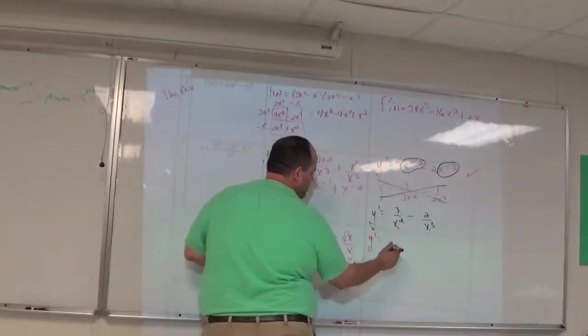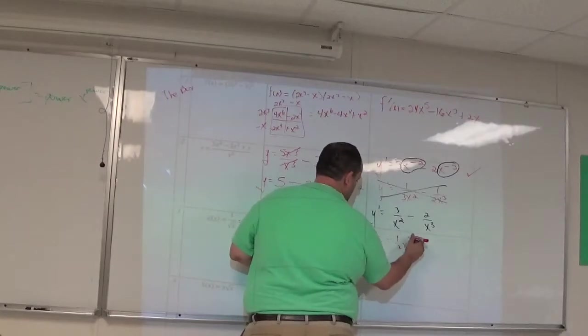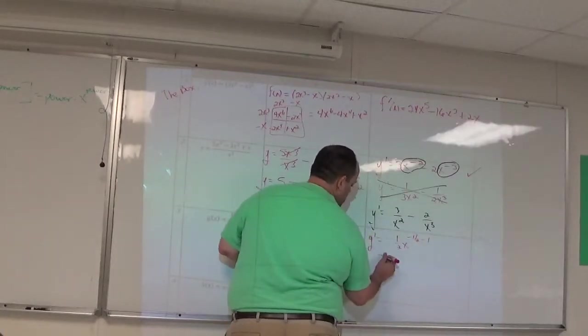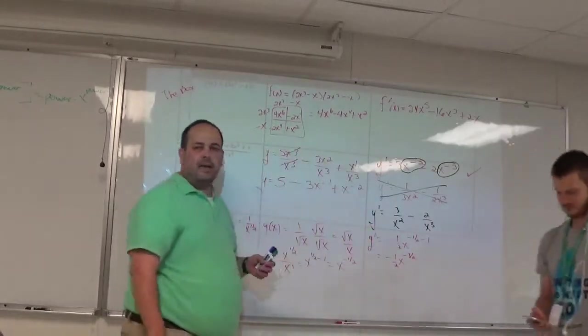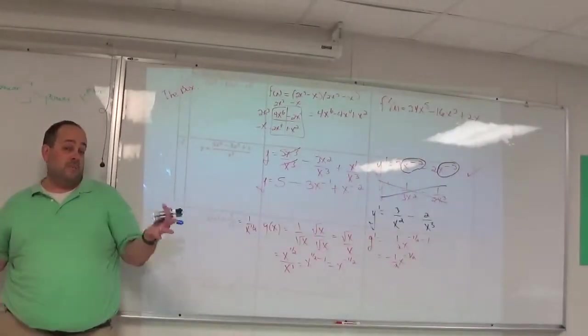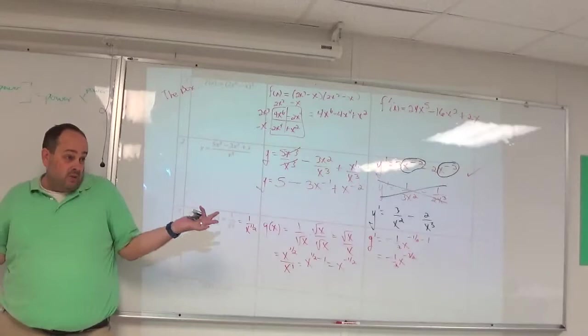You also could have gotten there right away. One over the square root of X is the same as one over X to the positive-half power. And one over X to the positive-half power is X to the negative-half. The derivative, G prime, is power rule, bring that power down, reduce the power by one, so negative-half X to the negative-3 over 2.